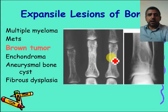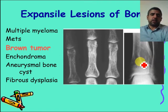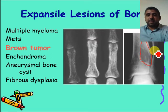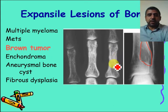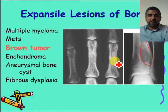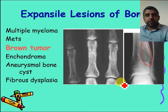Regarding brown tumor — it is related to hyperparathyroidism, not a real tumor. You can see the tumor is sharply defined, lytic, and expanding the bone. The phalanges image shows a lace-like pattern and subperiosteal resorption — subtle but visible — indicating hyperparathyroidism.